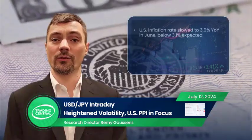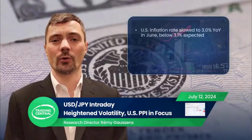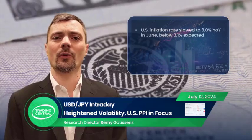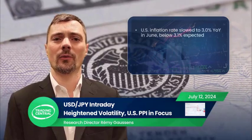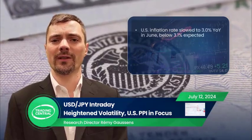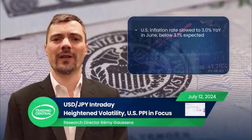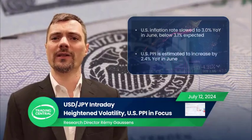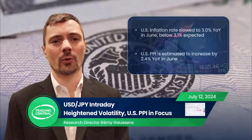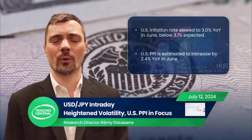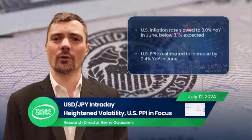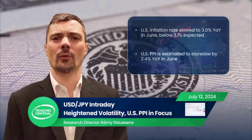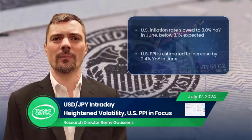The U.S. inflation rate slowed to 3% year-on-year in June, below the 3.1% expected. Later today, the producer price index is estimated to increase by 2.4% year-on-year in June, up from 2.2% in May.